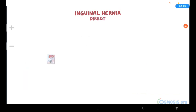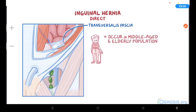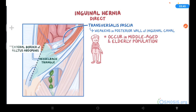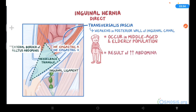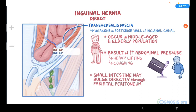Direct inguinal hernias are acquired hernias that result from the weakening of the transversalis fascia. Since the abdominal walls weaken with age, direct hernias tend to occur in the middle-aged and elderly population. Most commonly, the transversalis fascia weakens in the posterior wall of the inguinal canal within a region called Hesselbach's triangle — an area defined medially by the lateral border of the rectus abdominis, superolaterally by the inferior epigastric vessels, and inferiorly by the inguinal ligament. A hernia through Hesselbach's triangle may result from increased abdominal pressure, such as heavy lifting or coughing, causing an organ like the small intestine to bulge directly through the parietal peritoneum, medial to the inferior epigastric vessels and lateral to the rectus abdominis muscles, going through the external inguinal ring only.